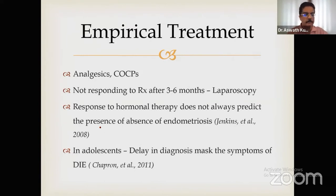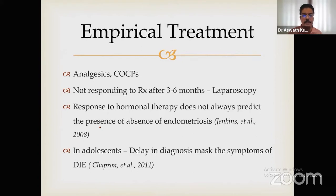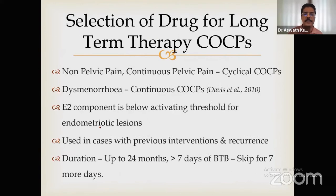For empirical treatment, analgesics and COCs are the main empirical options. Do not continue empirical treatment for more than three to six months; if not responding, proceed to laparoscopy for confirmation. Problems with empirical response: it does not always predict the presence of endometriosis, symptoms may resolve without confirming the diagnosis, and empirical treatment may delay diagnosis of deep infiltrating endometriosis.